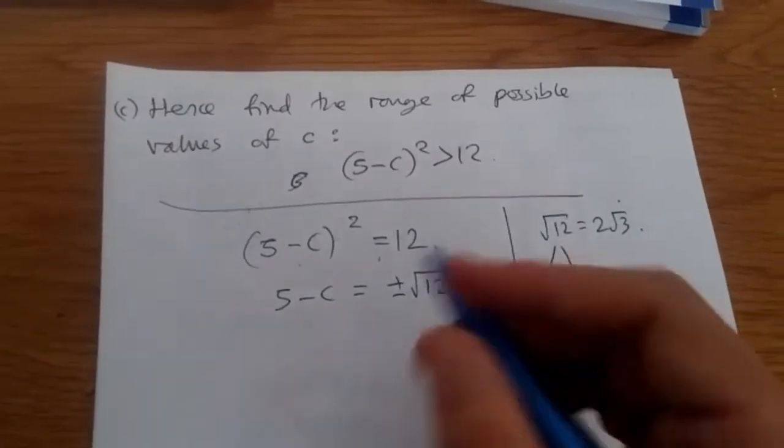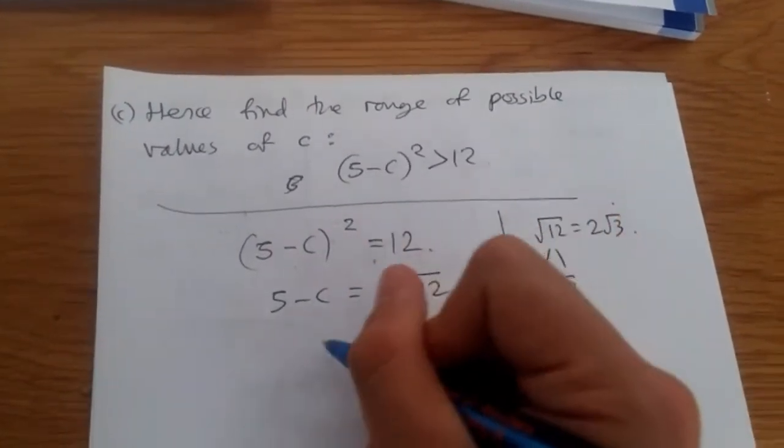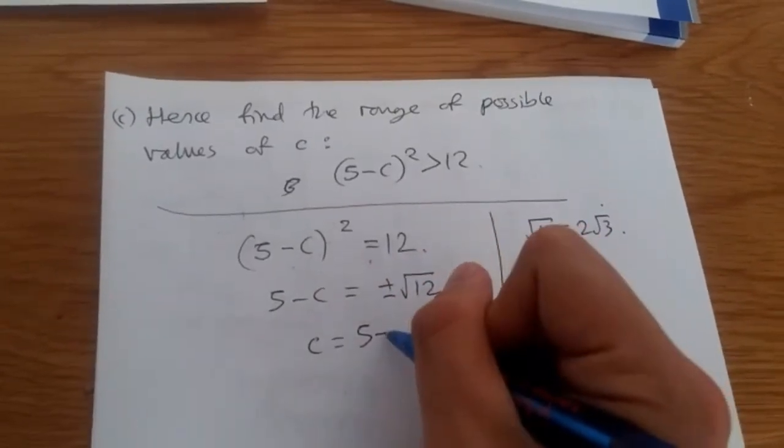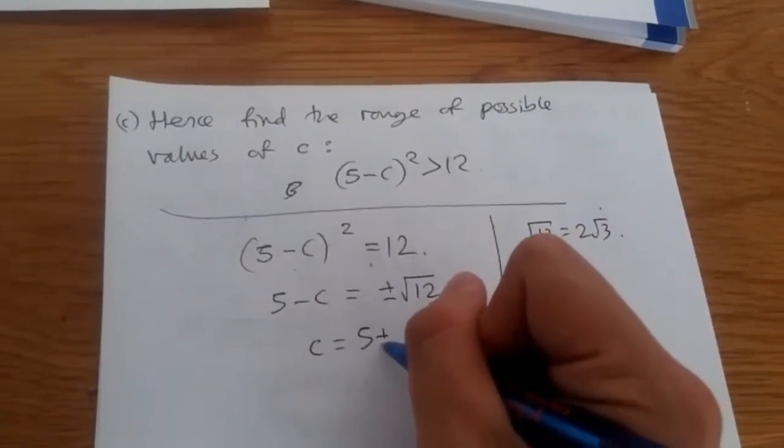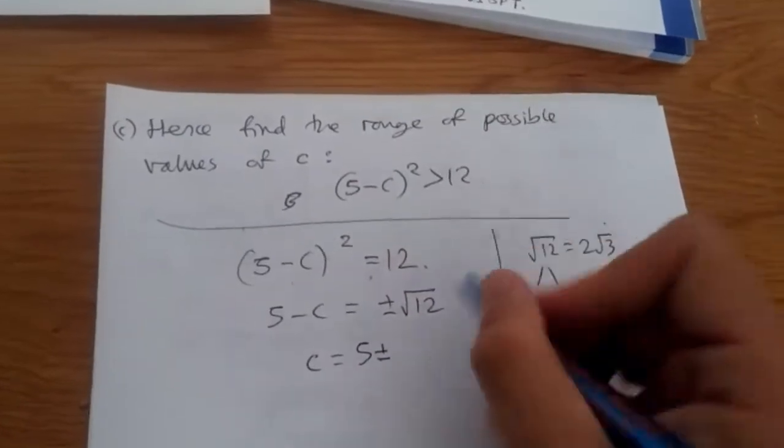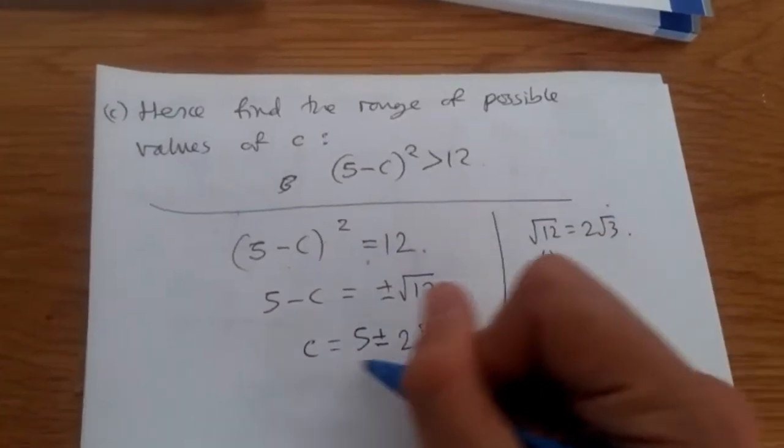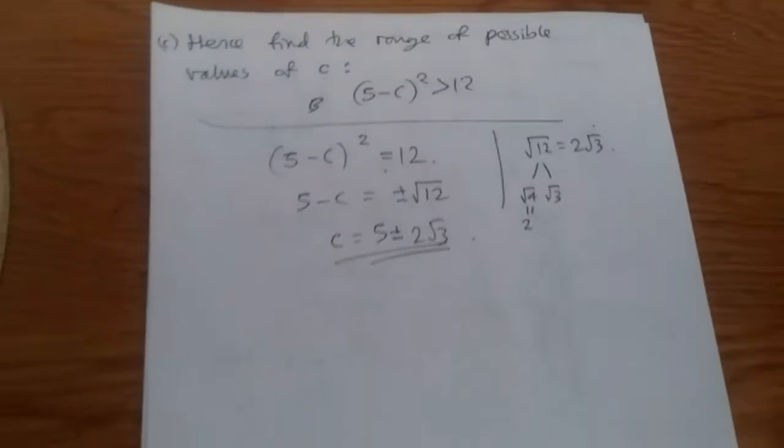Now, solving for c, and subtracting this, we should get c equals 5 plus or minus 2 root 3. So, this is your points of intersection on the curve.